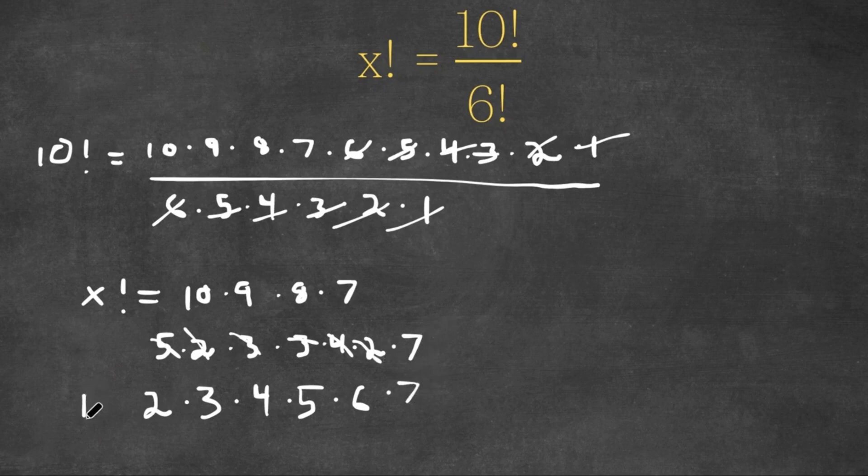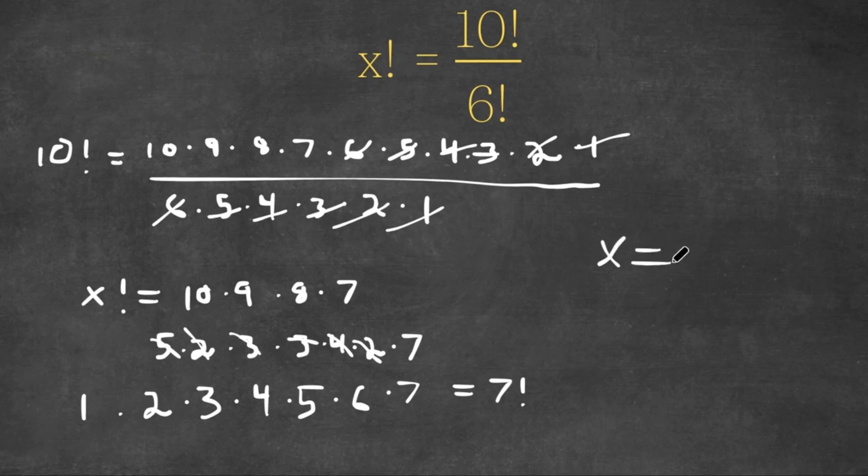So we could think of 1 times this, because 1 times anything is itself. And as you can see, this is equal to 7 factorial, because it's 7 times 7 minus 1 times 7 minus 2, going on until 1. So this means that x is equal to 7.